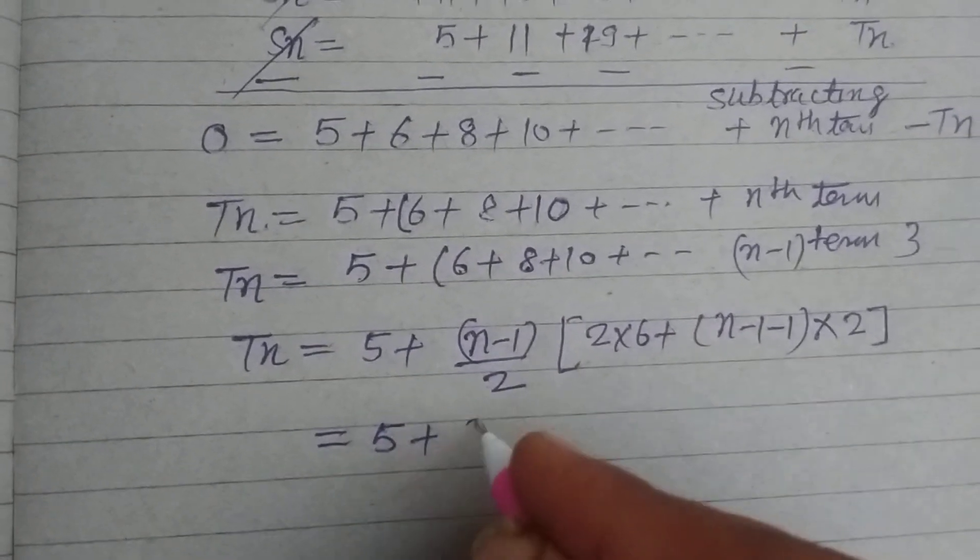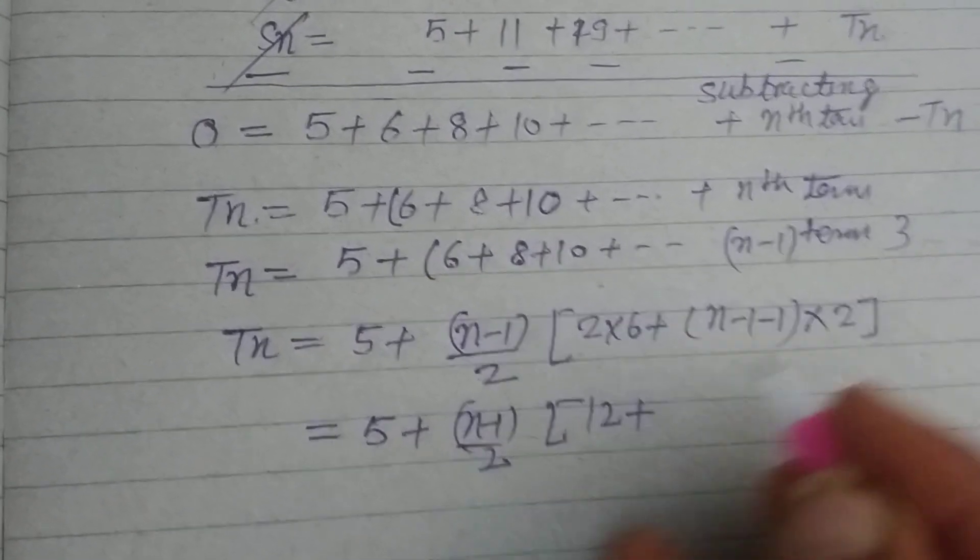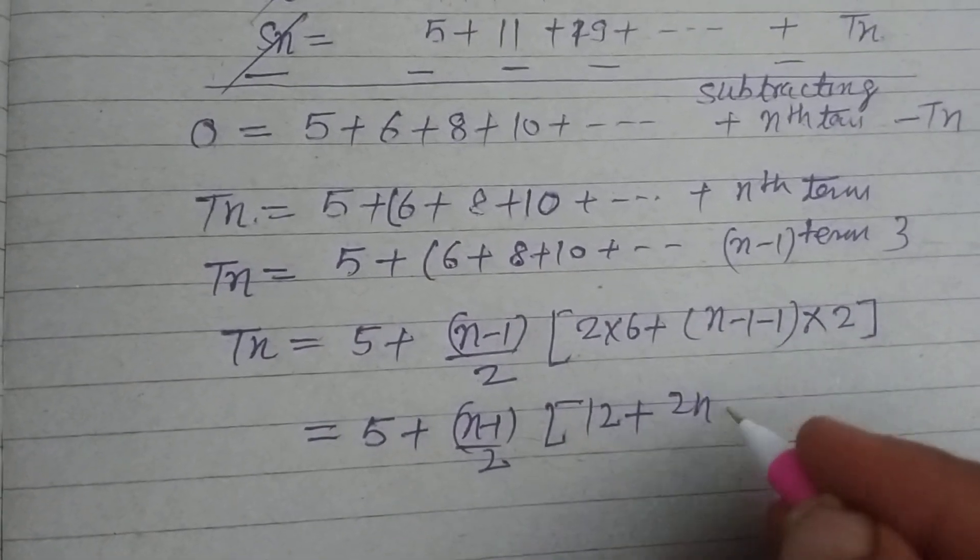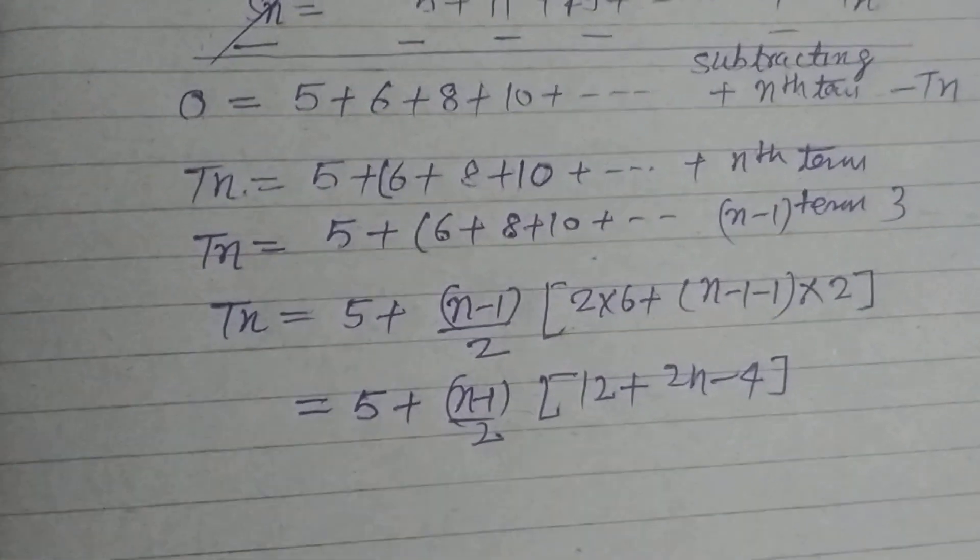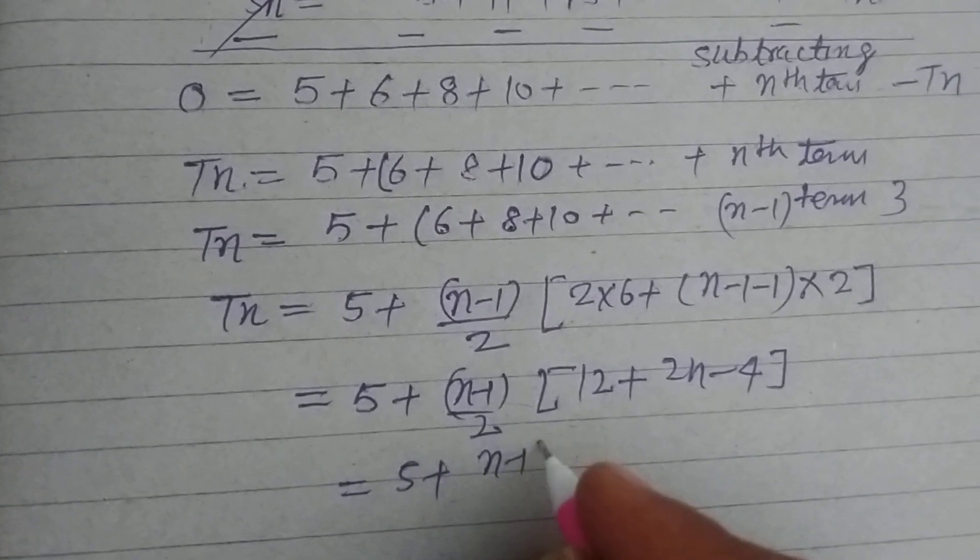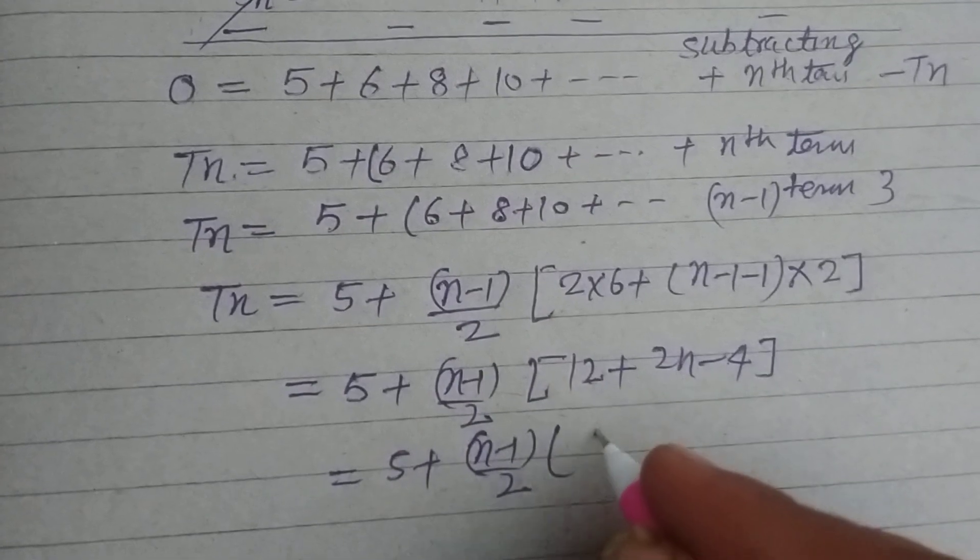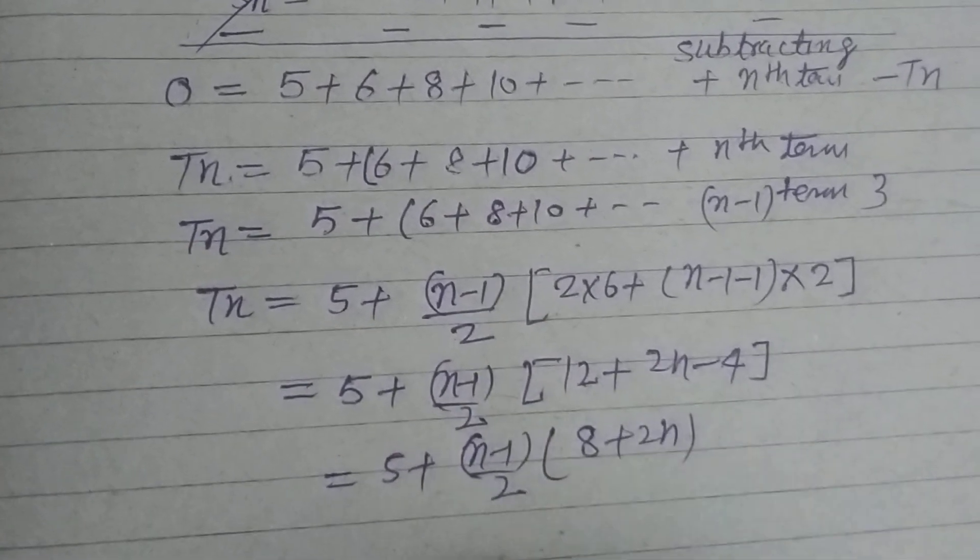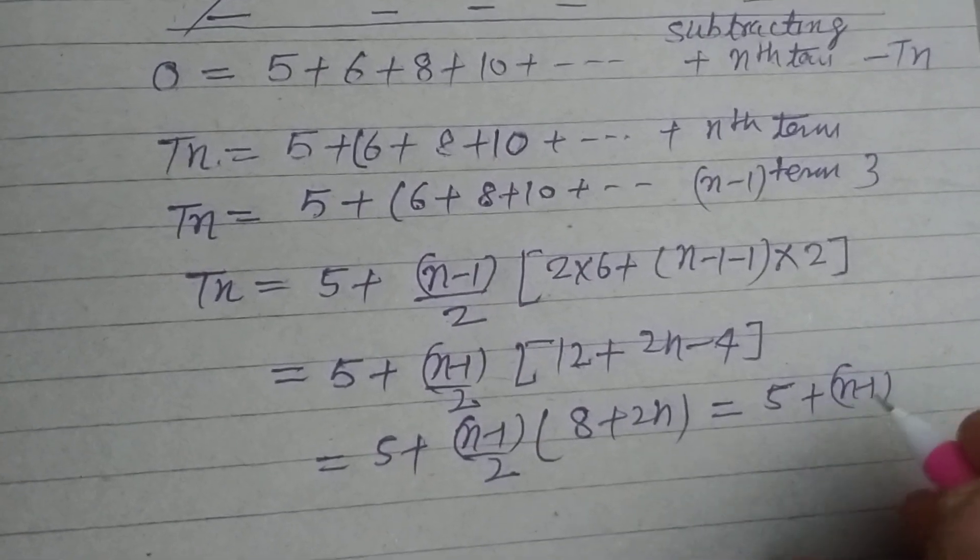So 5 plus N minus 1 by 2 times 12 plus 2N minus 4. So 5 plus N minus 1 by 2 times 12 minus 4, so 8 plus 2N.